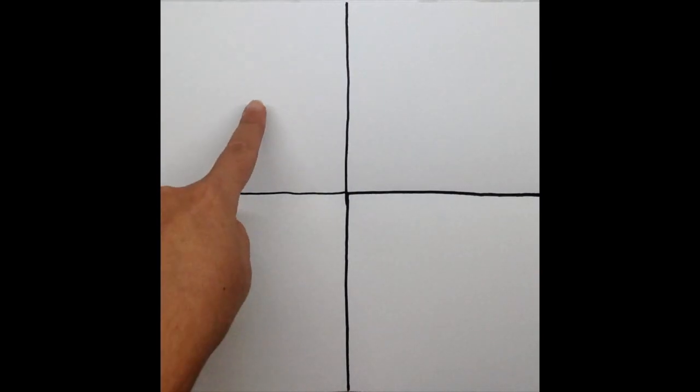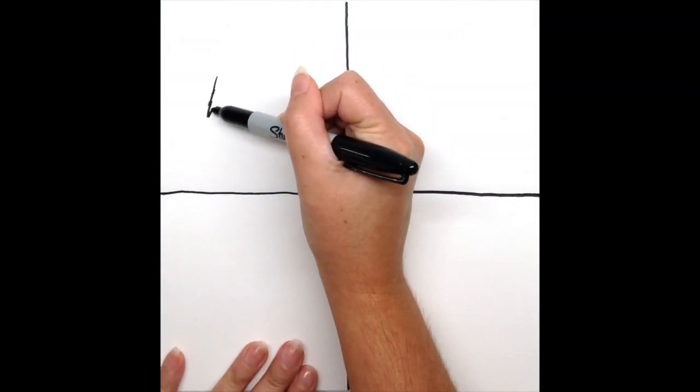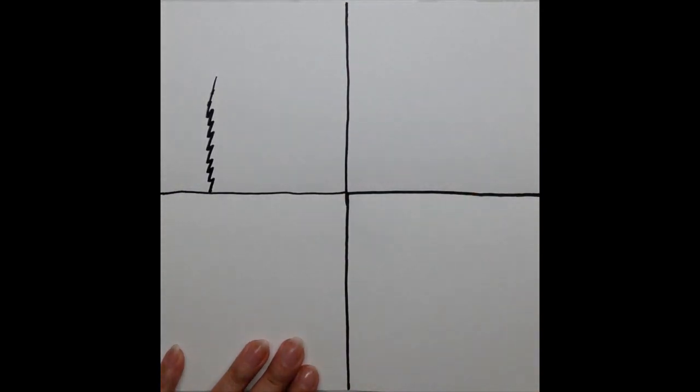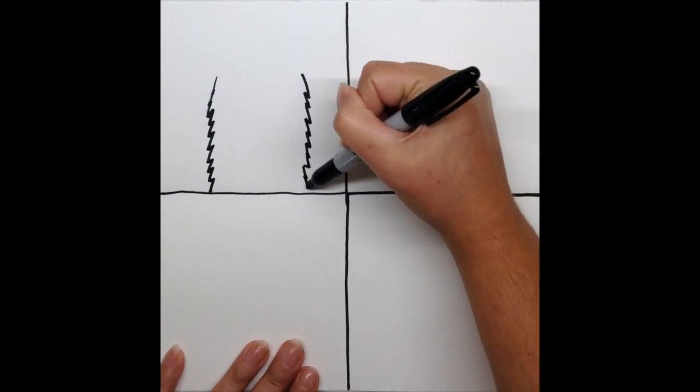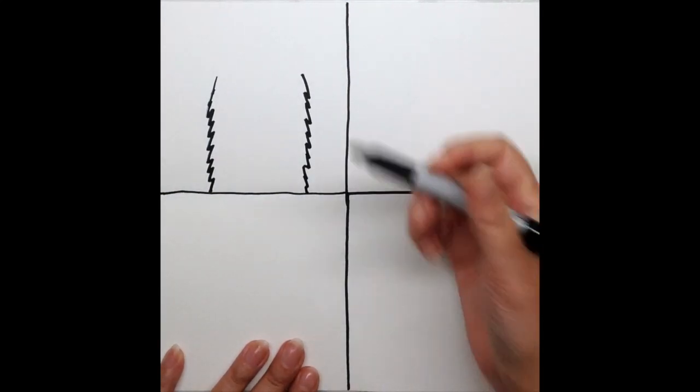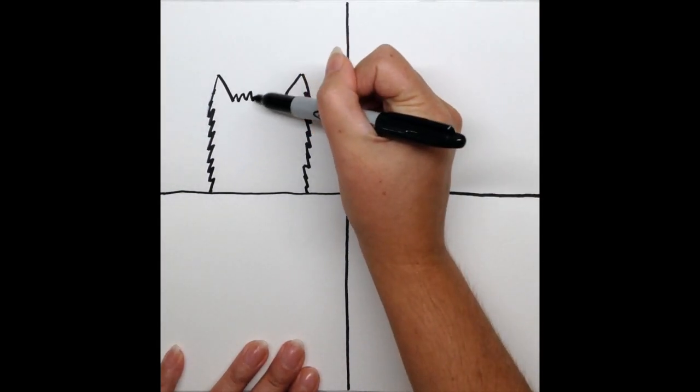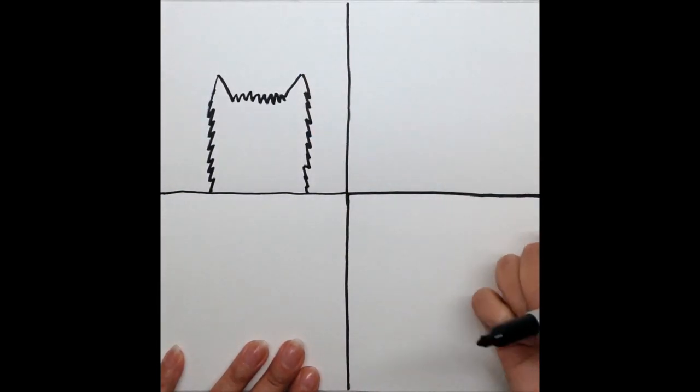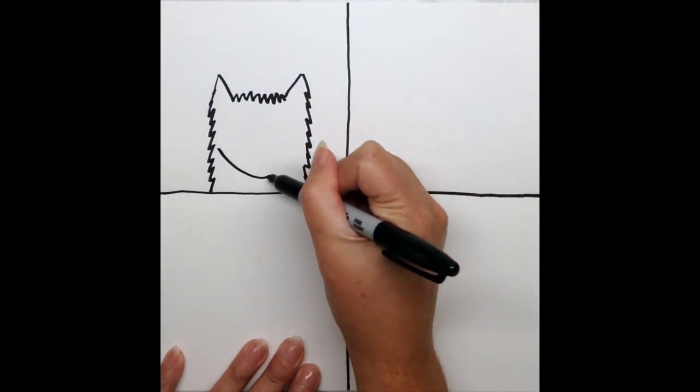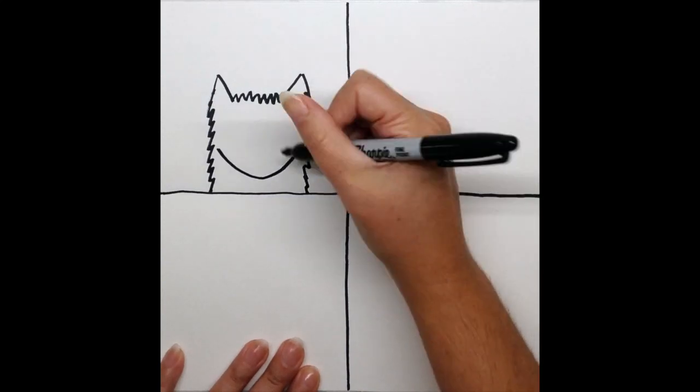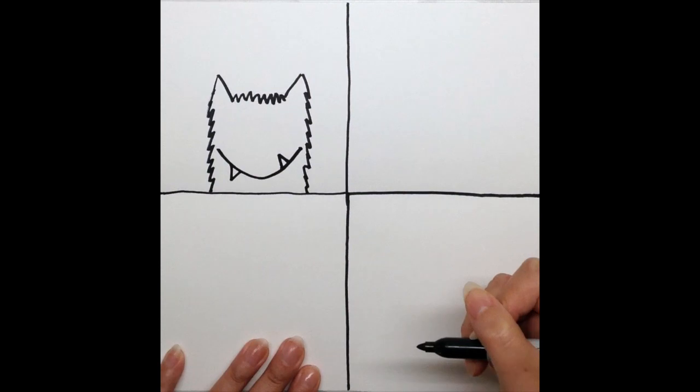Our first color monster is going to be a calm and peaceful emotion color monster. We're going to use vertical zigzag lines for the edges of his body, and then make his ears into triangles. Connect that with a small zigzag line for the top of his head, and then create a peaceful and calm expression for his face to show his emotion.